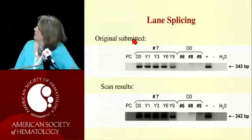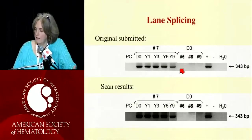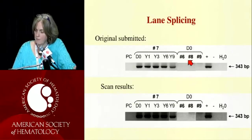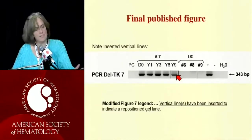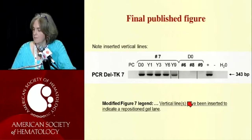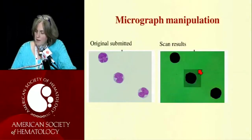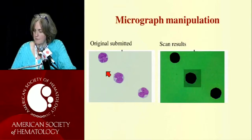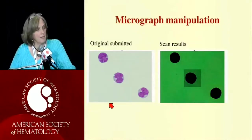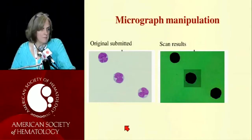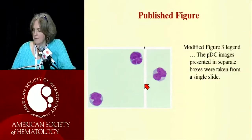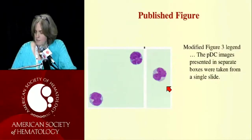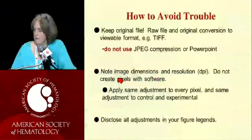One example shows a typical lane splicing case that was pretty obvious because the lanes weren't even lined up well — the scan revealed it clearly. It involved patient samples they couldn't replace, so we had them put lines in and it was okay. In another photomicrograph example, the authors wanted three cells instead of two and dropped a cell in from somewhere else in the image. Even though it was from the same slide, that wasn't acceptable — we asked them to separate the cells and show a box if they wanted to show three cells.